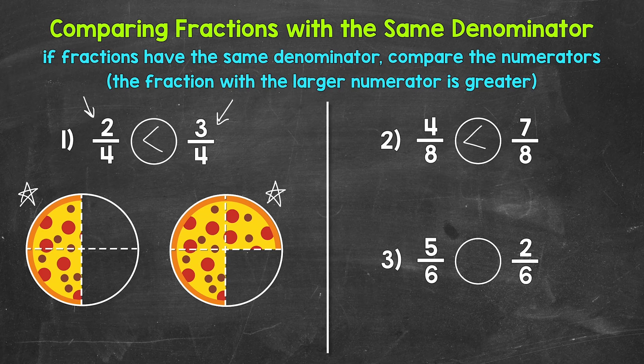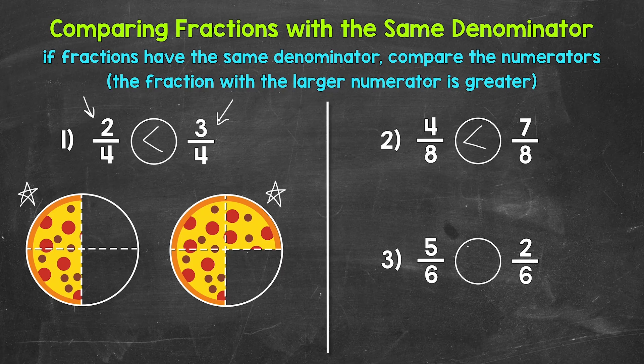Lastly, let's move on to number three where we have five-sixths and two-sixths. Reading from left to right: five-sixths is greater than, less than, or equal to two-sixths. If we have the same sized whole divided into six equal pieces, which is greater — five out of the six total pieces or two out of the six total pieces? We have the same denominator, so we just compare the numerators. Five is greater than two, so five-sixths is greater. Our symbol opens up towards five-sixths, and we can read this from left to right as five-sixths is greater than two-sixths.